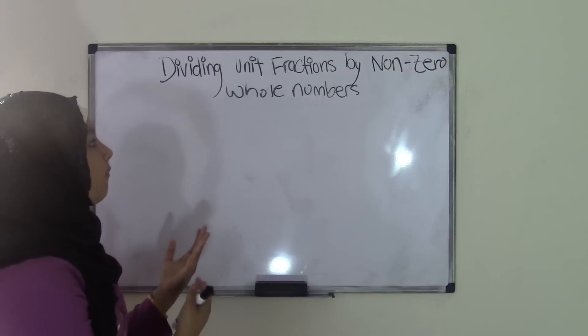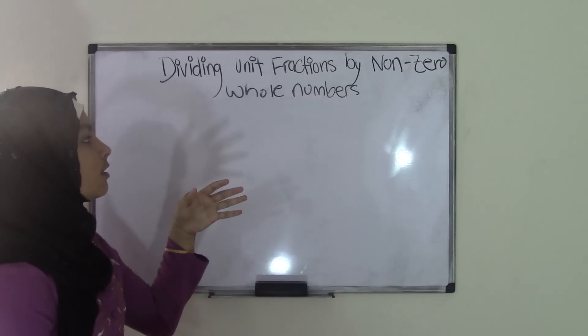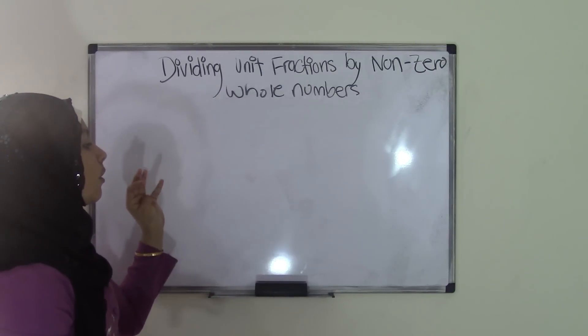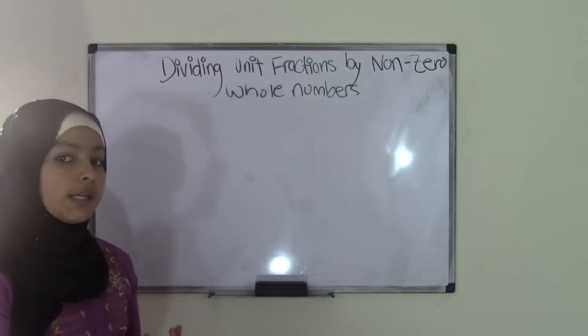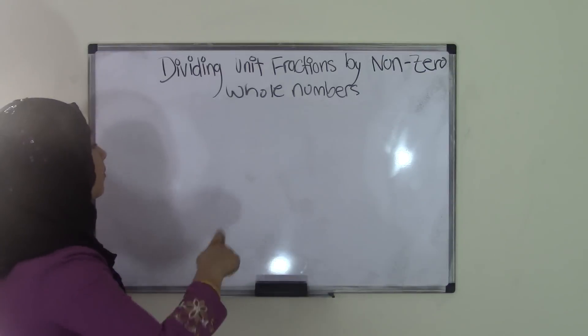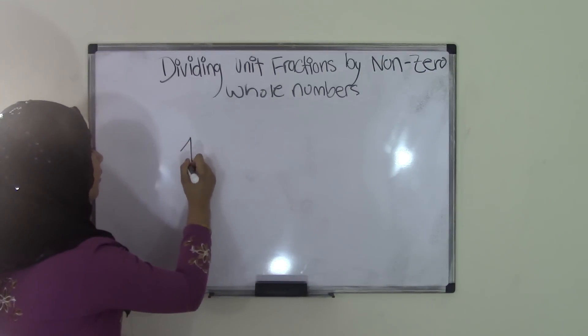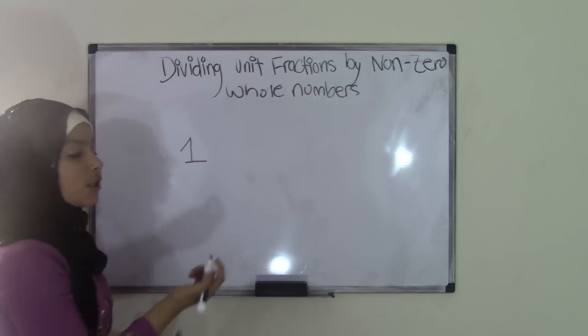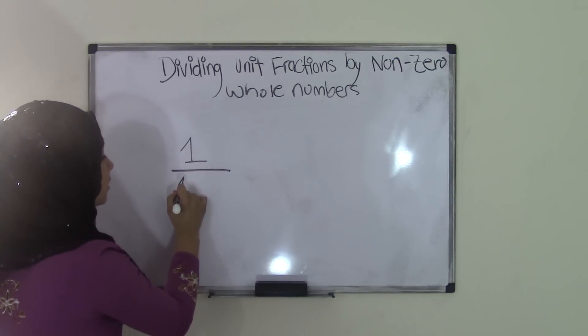So to start off with, dividing unit fractions by non-zero whole numbers is just that your dividend is going to be a unit fraction and your divisor is going to be a non-zero whole number. So for instance, let's say we have a problem such as, our dividend is going to be a unit fraction, so 1 over 16.